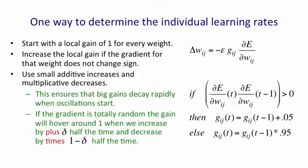It's interesting to ask what would happen if the gradient was totally random. So on each update of the weights, pick a random gradient. Then you'll get an equal number of increases and decreases, because it will equally often be the same sign as the previous gradient or the opposite sign.